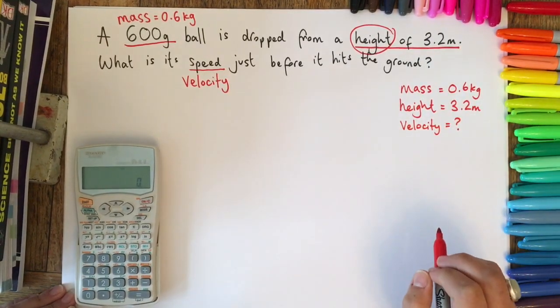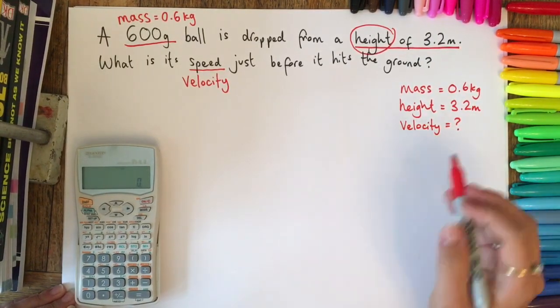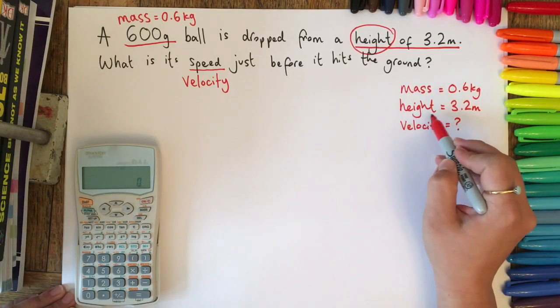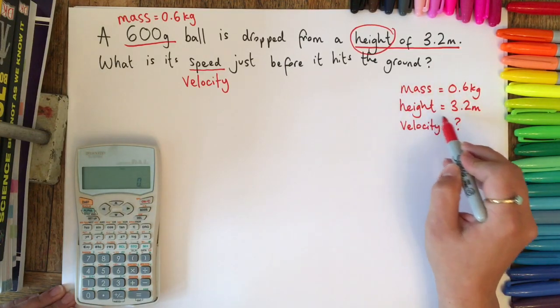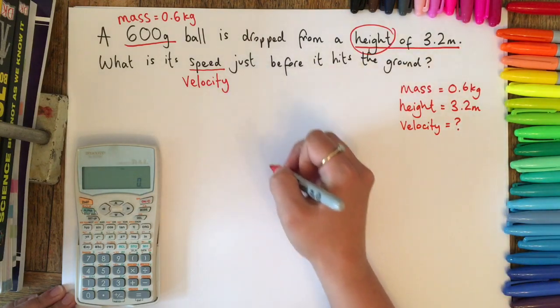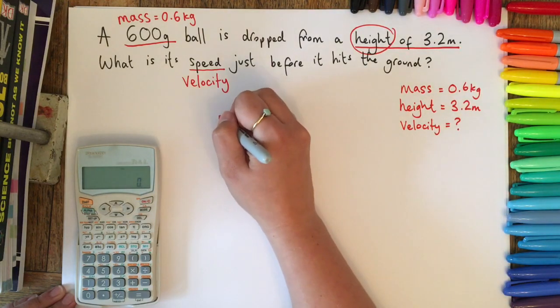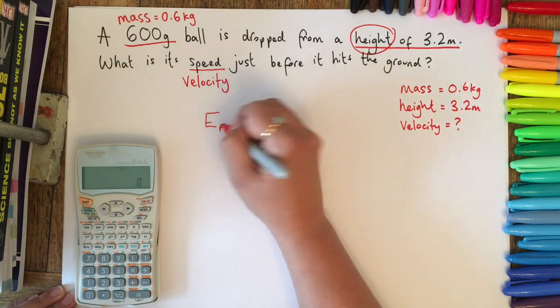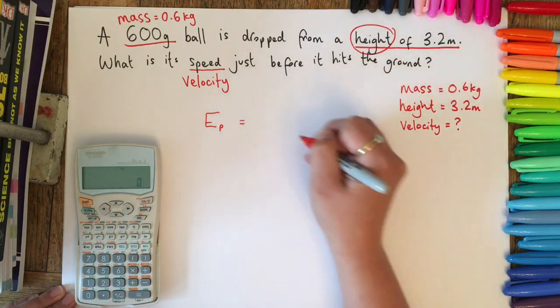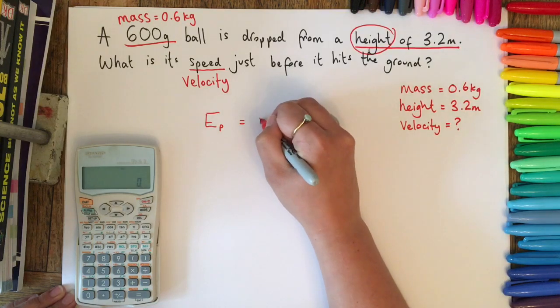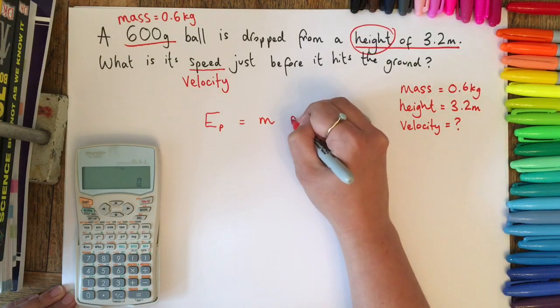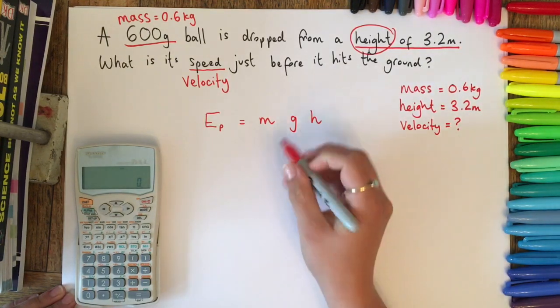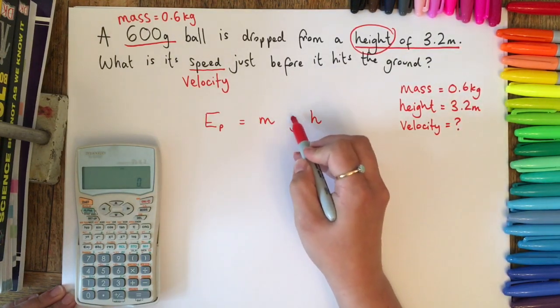If you think about the equations that you've used, there is one equation that links mass and height, and that is the equation for gravitational potential energy. You might have seen it as GPE; I'm going to write it as E with a little p like that. The equation for gravitational potential energy is mass times small g times height, and mass times small g is the weight of an object.